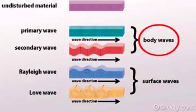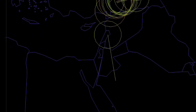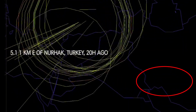Secondary waves, also known as S waves, are slower than P waves and can only pass through solids. S waves reach the surface and combine with P waves to form surface waves. Surface waves are the most destructive waves and are concentrated at the epicenter.